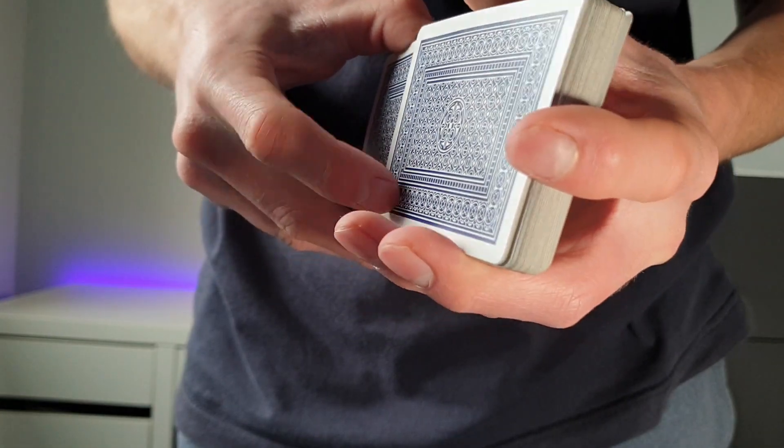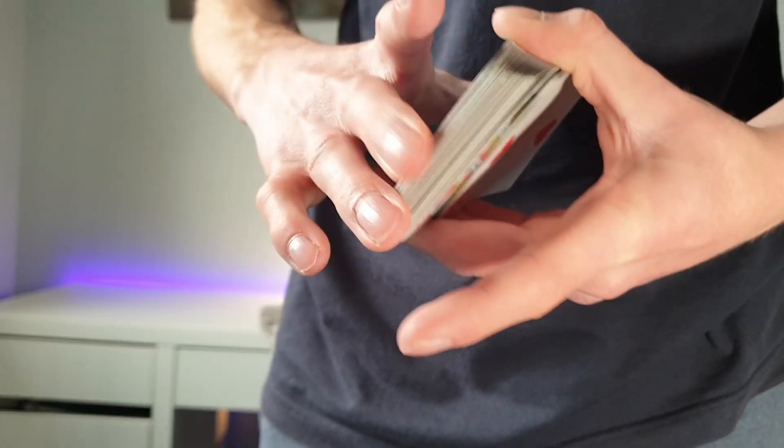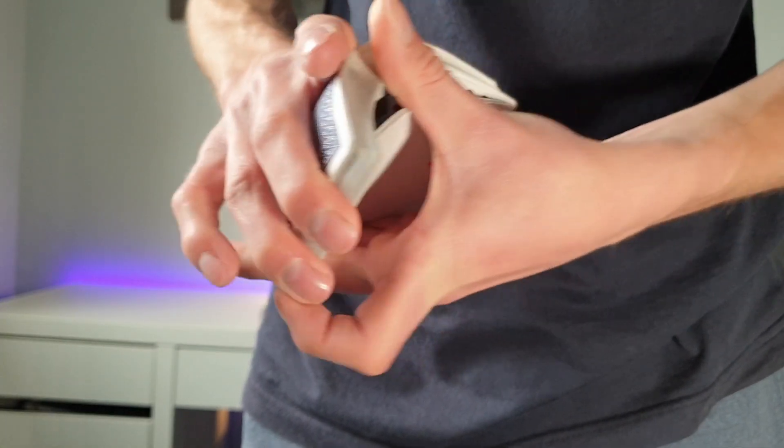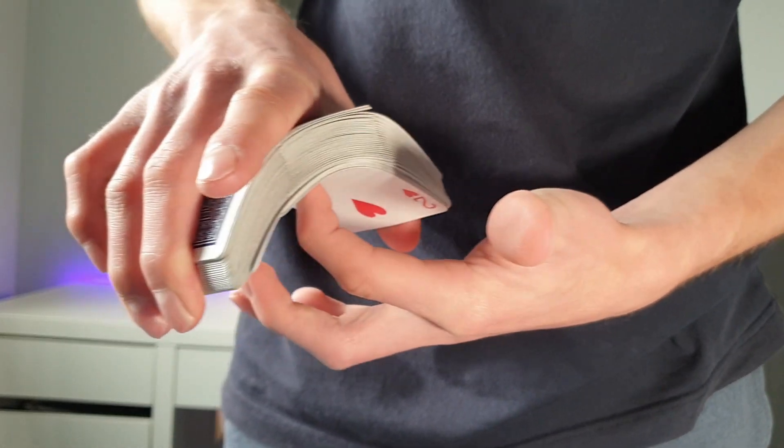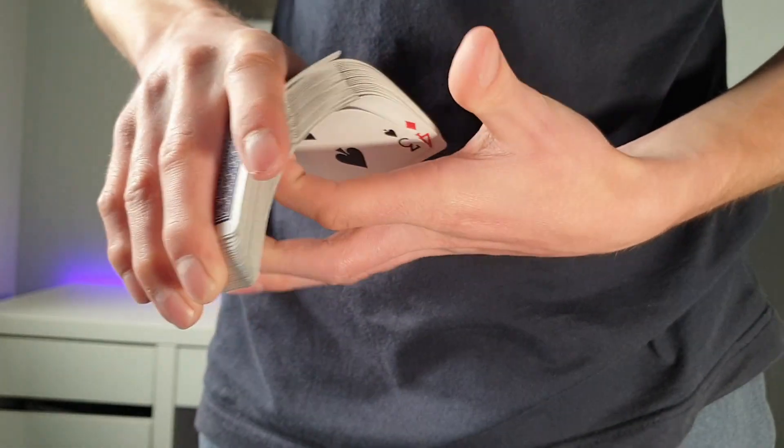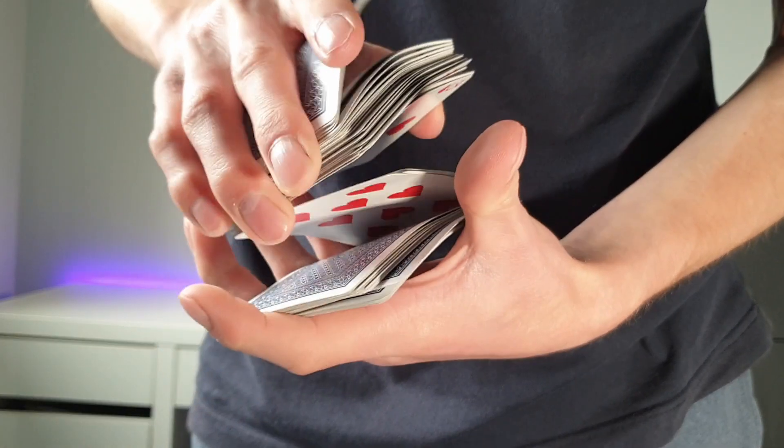Then push the cards in slightly. Taking your thumb, middle and ring finger, we're going to bow the cards down into this bridge using the index finger to balance it all. Then you're going to release with the index finger and let the cards merge together.